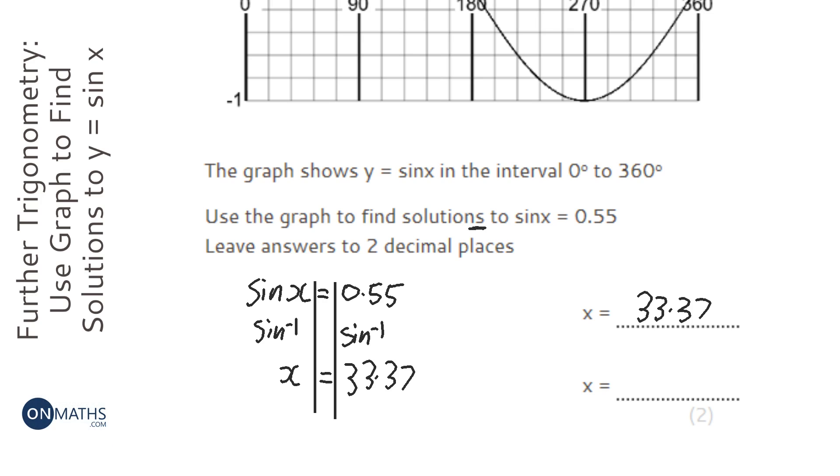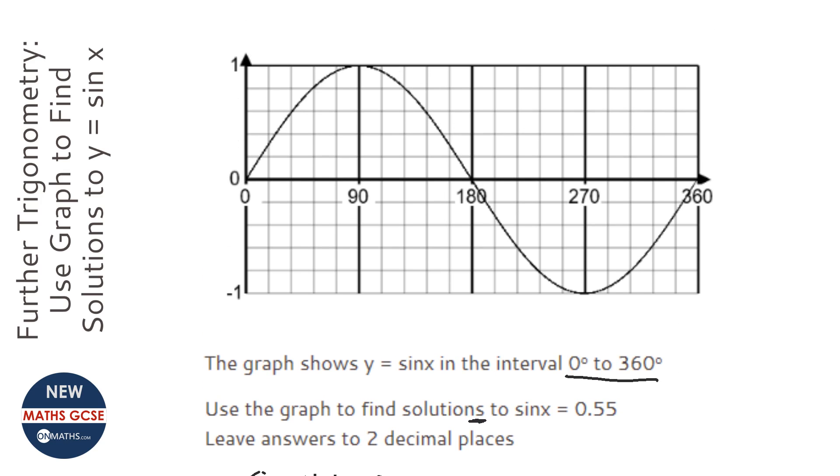Unfortunately, it says find the solutions between 0 and 360, and the calculator has an issue, because it can only show one answer, so if you type in square root of 9, for instance, you'll only get 3, you won't get the minus 3 as well, and it's the same for trigonometry.